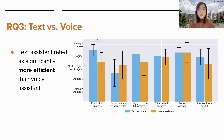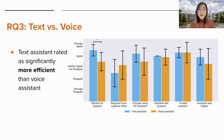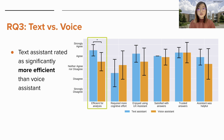The last research question was about perceptions of voice versus text. We found that the text assistant was rated as significantly more efficient than the voice assistant. Although not significant, the voice assistant was also rated as requiring more effort and offering less enjoyment. However, both were rated equally in terms of satisfaction and trust in the provided answers, which makes sense since the wizard was the same for both conditions.